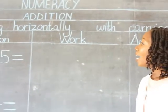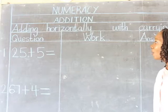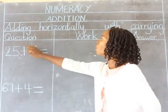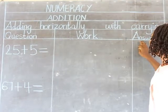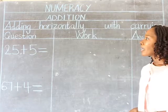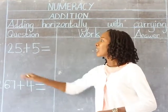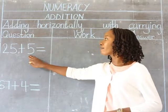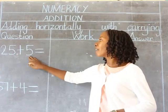I have divided my workspace into three places: the question place, the place for doing my work, and the answer place. Our first example is 25 plus 5.